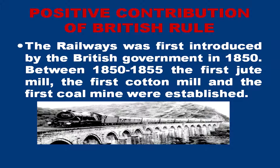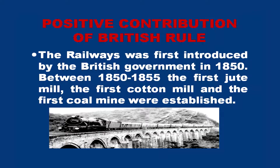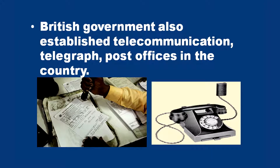During the British rule, the railways were introduced. One of the positive impacts of British rule in India was the introduction of railways, first introduced in the year 1853 between Bombay and Thane. Between 1850 and 1855, the first jute mill, the first cotton mill, and the first coal mine were all established. The British government also set up telecommunication, telegraph, and post offices in the country. All of these can be pointed out as positive impacts of British rule in India.